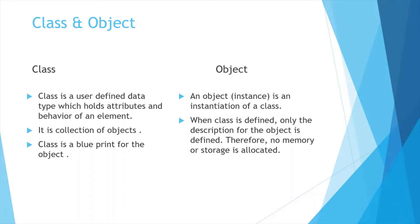What is a class? A class is nothing but a user-defined data type which holds attributes and behavior of an element. A class is a blueprint of an object. And what is an object? An object is an instantiation of a class. No memory is allocated when the class is just defined — the memory allocation will be done only when the object is created.